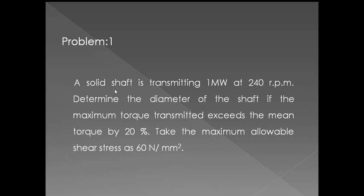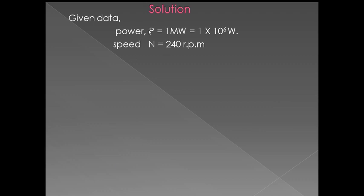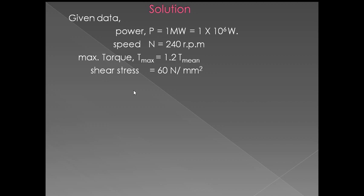Problem 1: A solid shaft is transmitting 1 megawatt at 240 RPM. Determine the diameter of the shaft if the maximum torque transmitted exceeds the mean torque by 20%. Take the maximum allowable shear stress as 60 Newton per mm squared. Since the maximum torque is 20% above the mean torque, it equals 1.2 times the mean torque. Power is 1 × 10^6 watts, speed is 240 RPM, and shear stress is 60 N/mm².